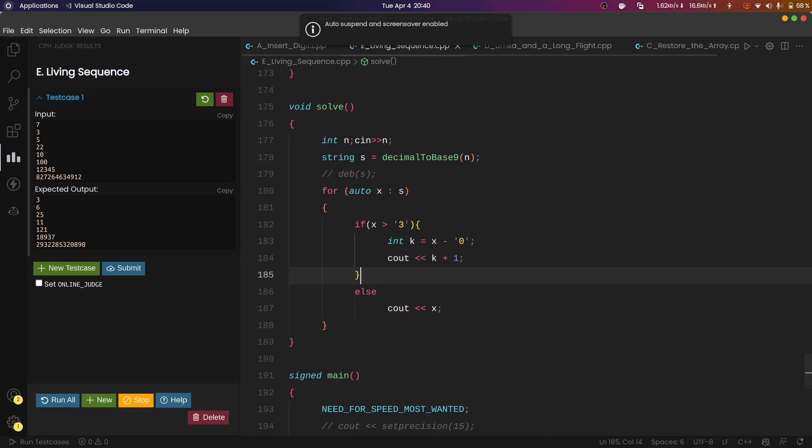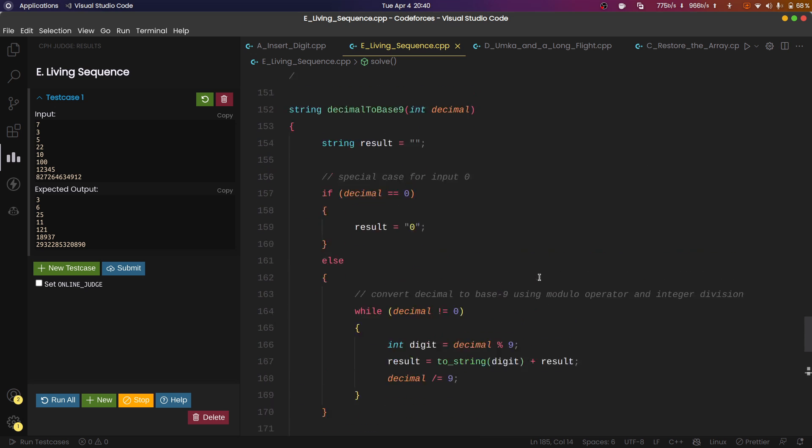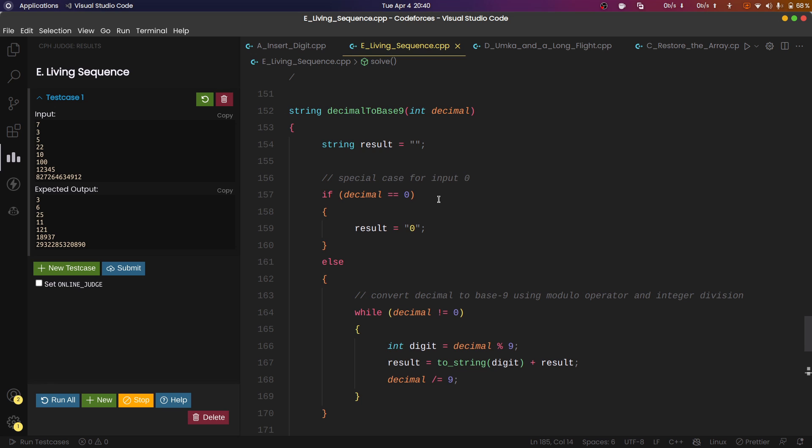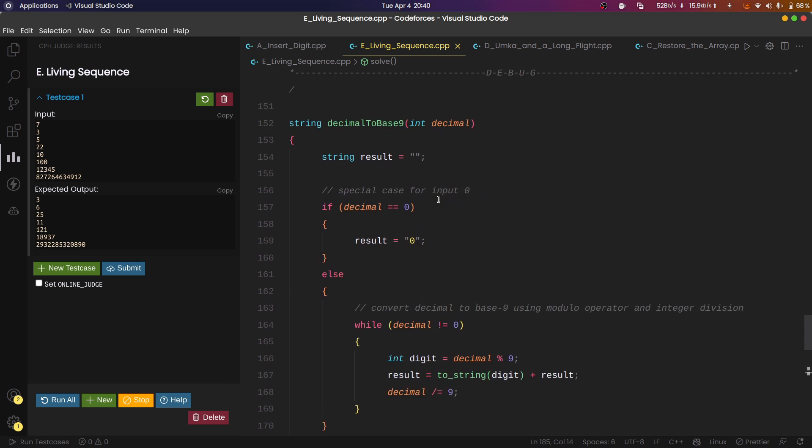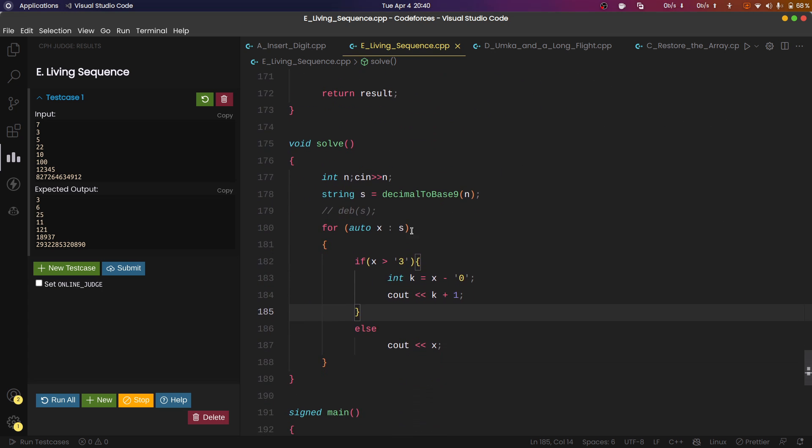In my solution for E Living Sequence, what I did first is I took an integer n as input, and then I passed that number to a function which converts this number to base 9 representation. You can find this function from the internet or you can use ChatGPT. I used ChatGPT to find this. After that, if my x is greater than 3, if the digit is greater than 3 at any position in the number, then I am just incrementing it by 1.